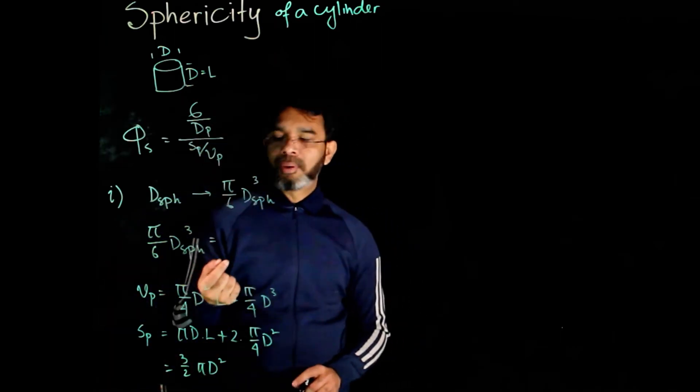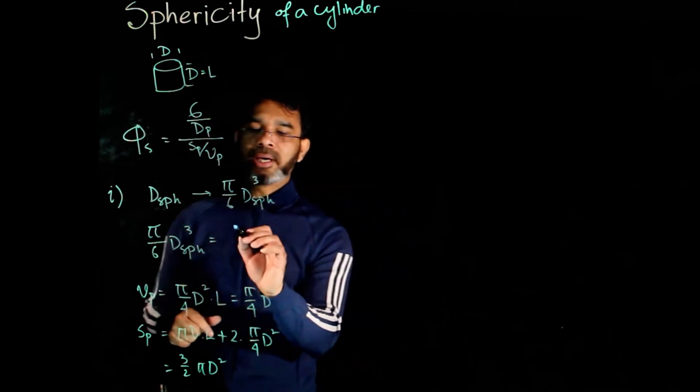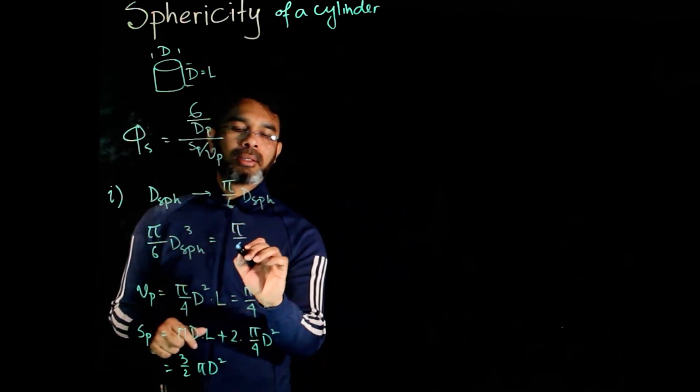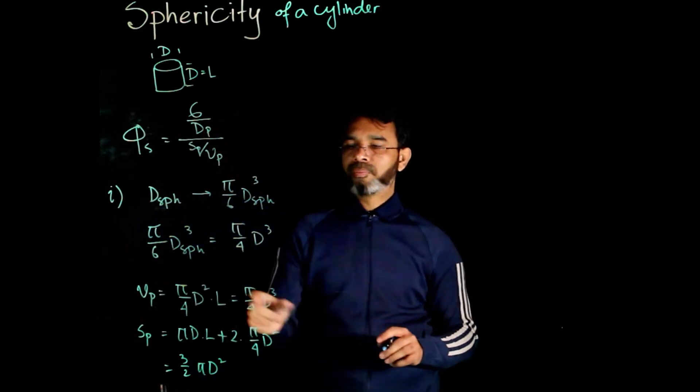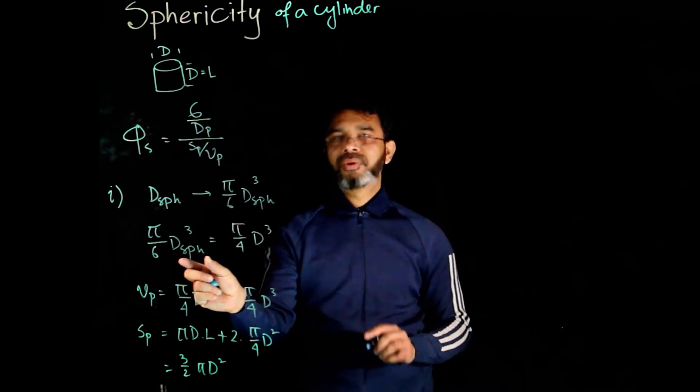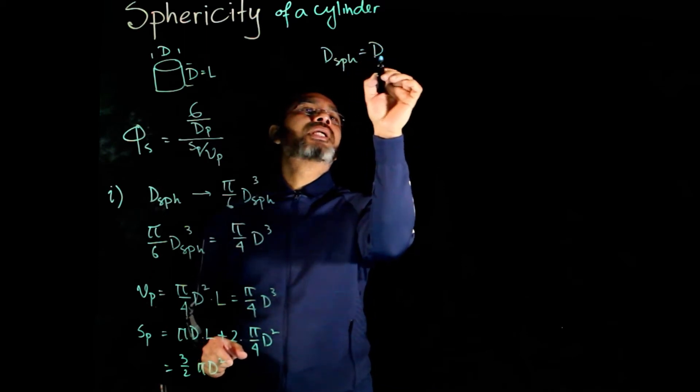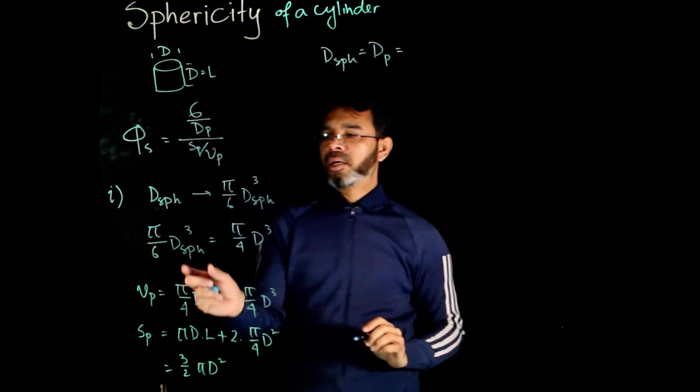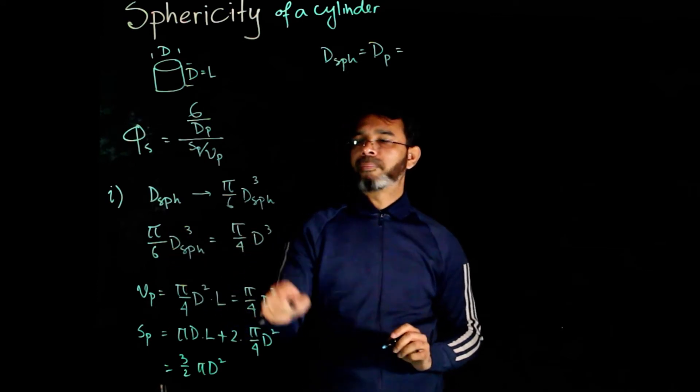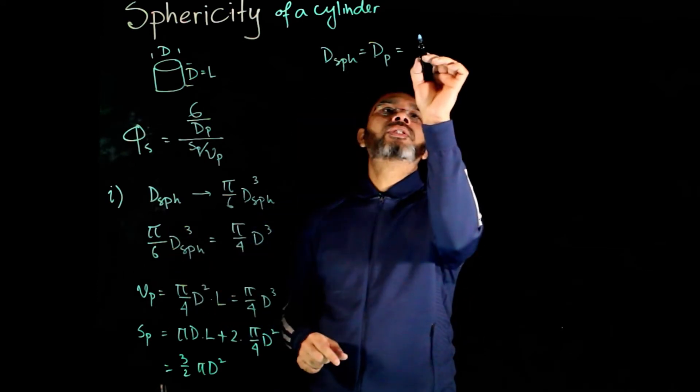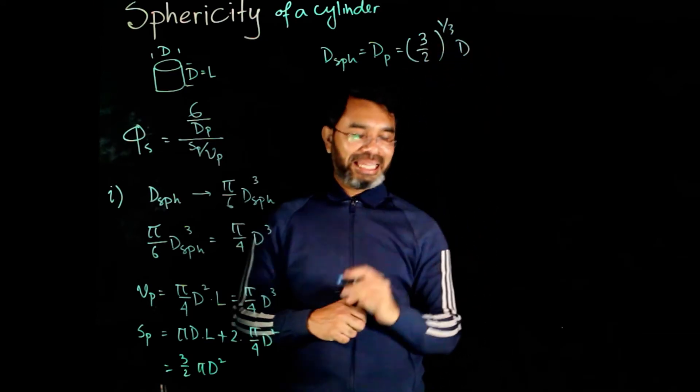Now, to determine the equivalent diameter, the volume of the sphere equals the volume of the particle which is pi over 4 d cube. So, the diameter of the sphere, which by definition is the equivalent diameter, will have pi canceling out. We have 3 over 2 d.